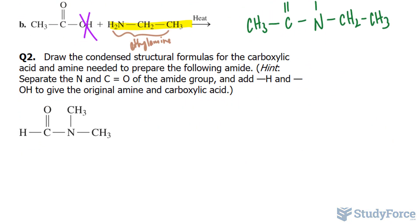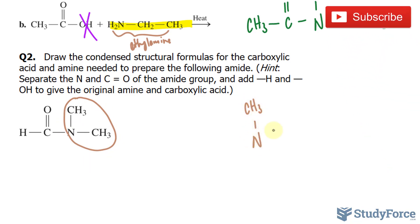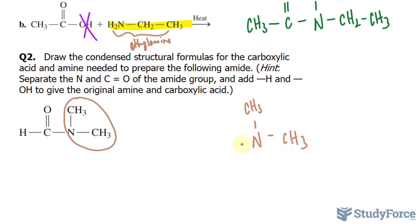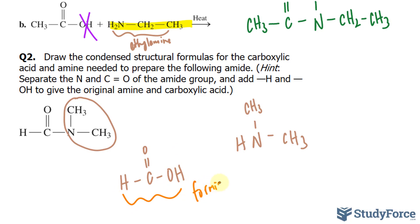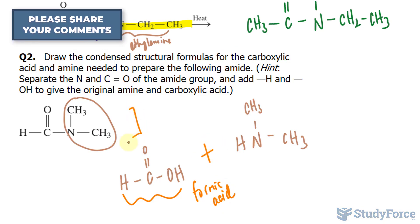Let's move on to question two: draw the condensed structural formulas for the carboxylic acid and amine needed to prepare the following amide. So unlike before, they're giving us the product and we need to come up with the reactants. Take a look at this part — we have nitrogen single bonded to these two methyl groups and bonded to this hydrogen. This part of the molecule was simply a carboxyl group. A carboxyl group on its own like this has the name formic acid. So these are the two reactants that need to come together to form the structure.